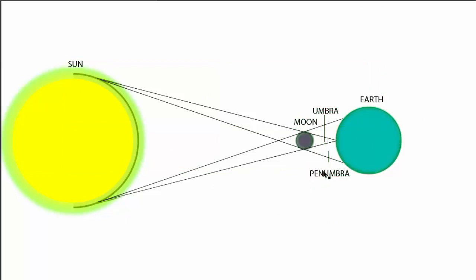The last time the contiguous United States saw a total eclipse was in 1979.